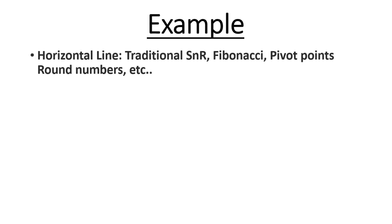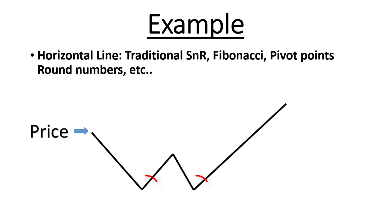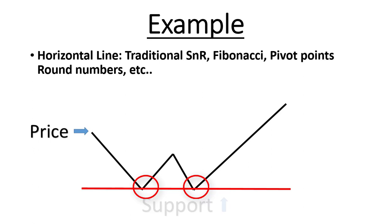First type: horizontal lines. These include traditional support and resistance, Fibonacci, pivot points, round numbers, etc. Here is the price — the price moved up, down, and up again, and it created two bounces on the downside direction. When it created that, this specific line — the red line — is our support.